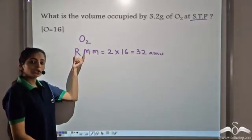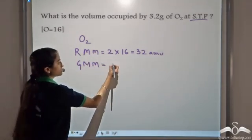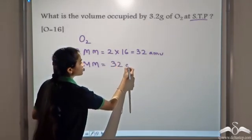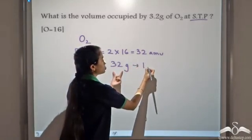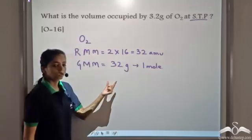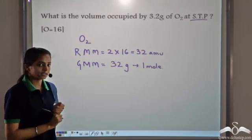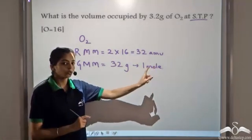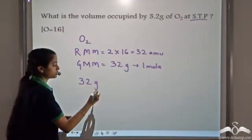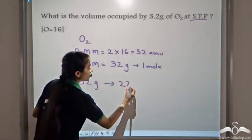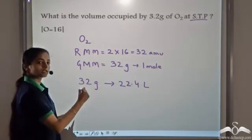When the relative molecular mass is expressed in grams, we get the gram molecular mass, which is equal to 32 grams. Now we know this amount is 1 mole. We know 1 mole of a gas occupies 22.4 litres at STP. So 1 mole occupies 22.4 litres, which means 32 grams of oxygen occupies 22.4 litres at STP. The amount of gas we are given is 3.2 grams.